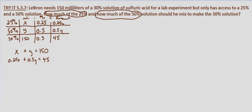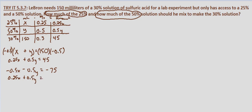To solve the system of equations, I'm going to use elimination to eliminate the y variable. We have 0.5y in the second equation, so we want negative 0.5y in our first equation. We multiply both sides of the first equation by negative 0.5, giving us negative 0.5x minus 0.5y equals negative 75.